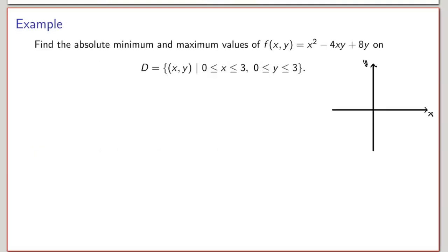Let's work through an example. Find the absolute minimum and maximum values of f(x,y) = x² − 4xy + 8y on the set D where x ∈ [0, 3] and y ∈ [0, 3]. The set D is a square including its boundary — it is closed because it includes its boundary with non-strict inequalities, and bounded because it has finite size and can be contained within a disk. So we can apply the extreme value theorem.